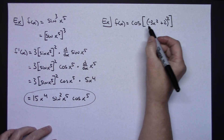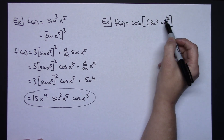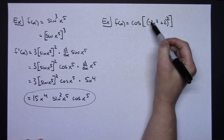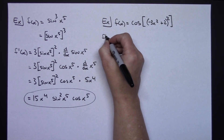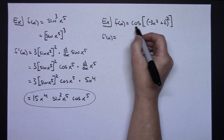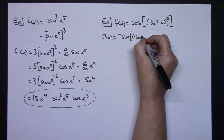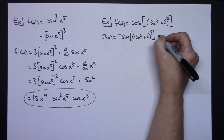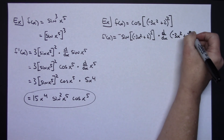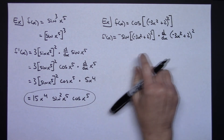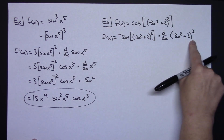In this example we have an outside function of cosine and an inside function of negative 3x squared plus 2, raised to the second power. That inside function is more complicated and will also involve a chain, so we've got a couple of chains going on. f prime of x: the derivative of cosine is negative sine, so negative sine of (−3x²+2)² times the derivative of that inside function (−3x²+2)².